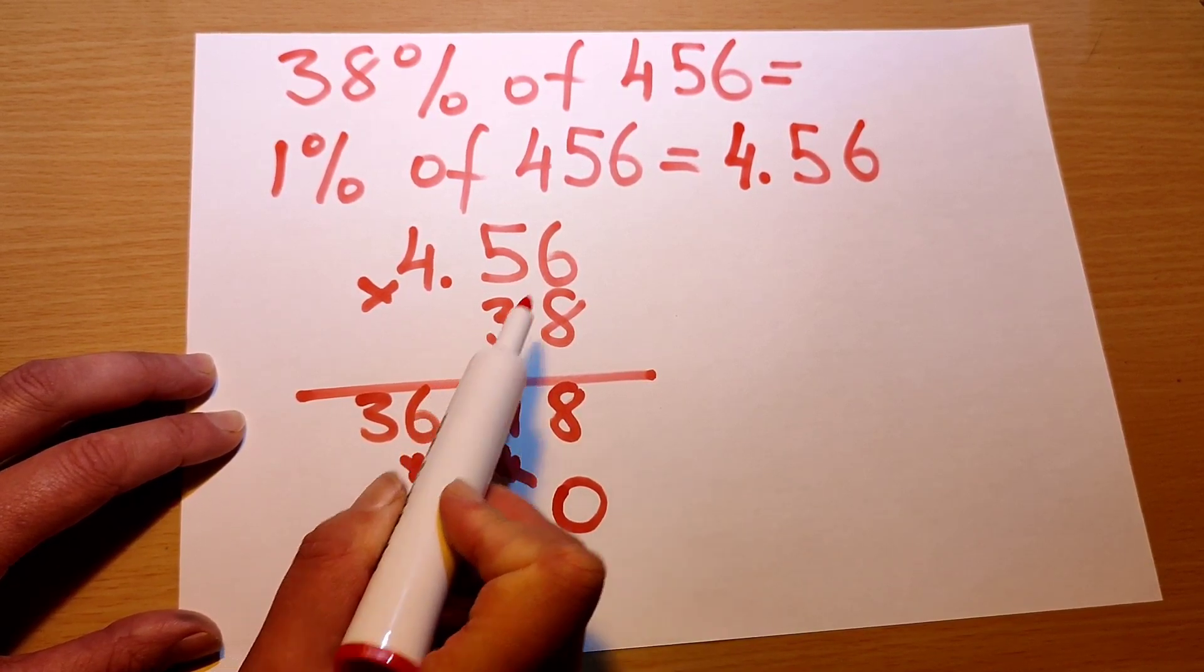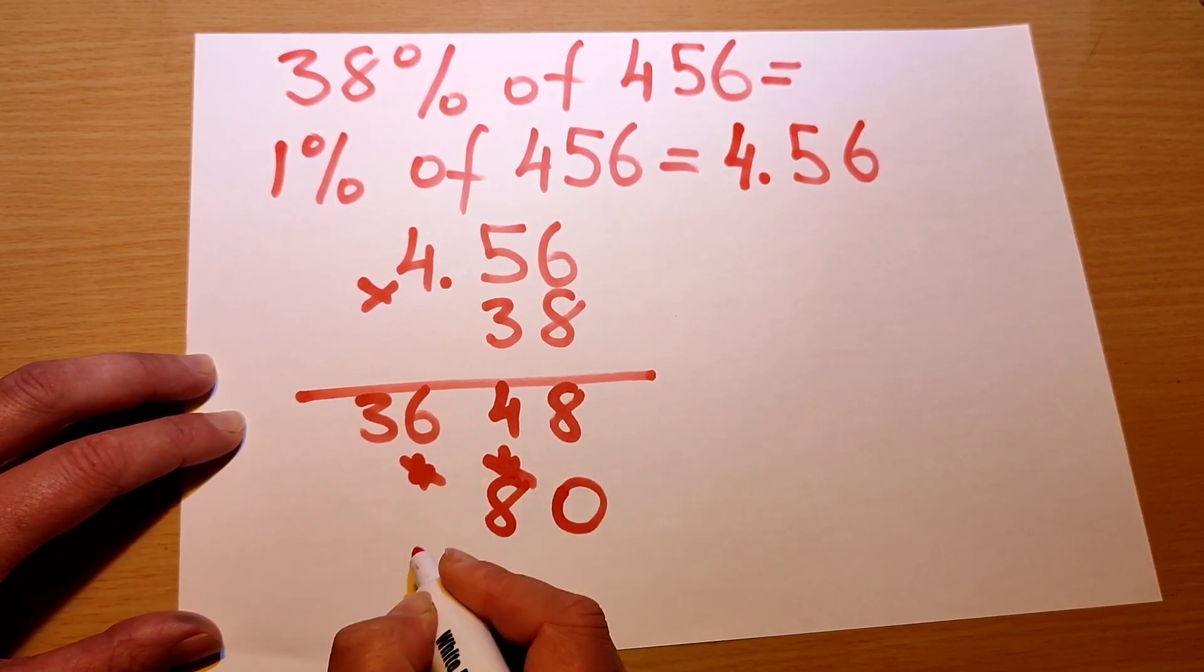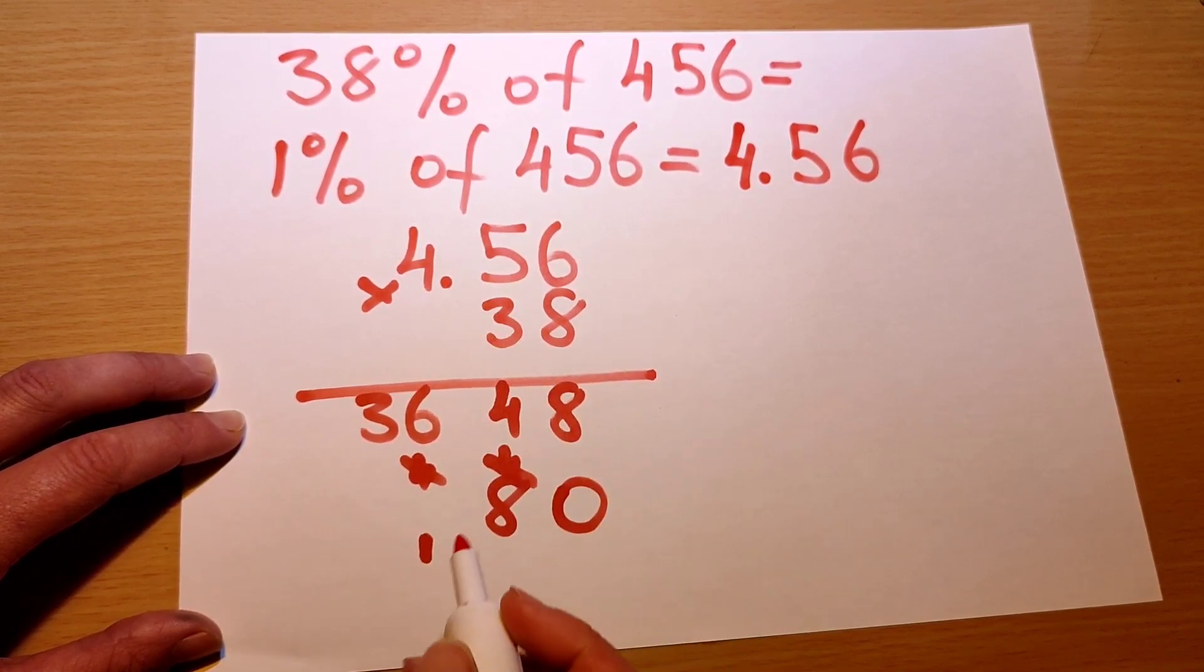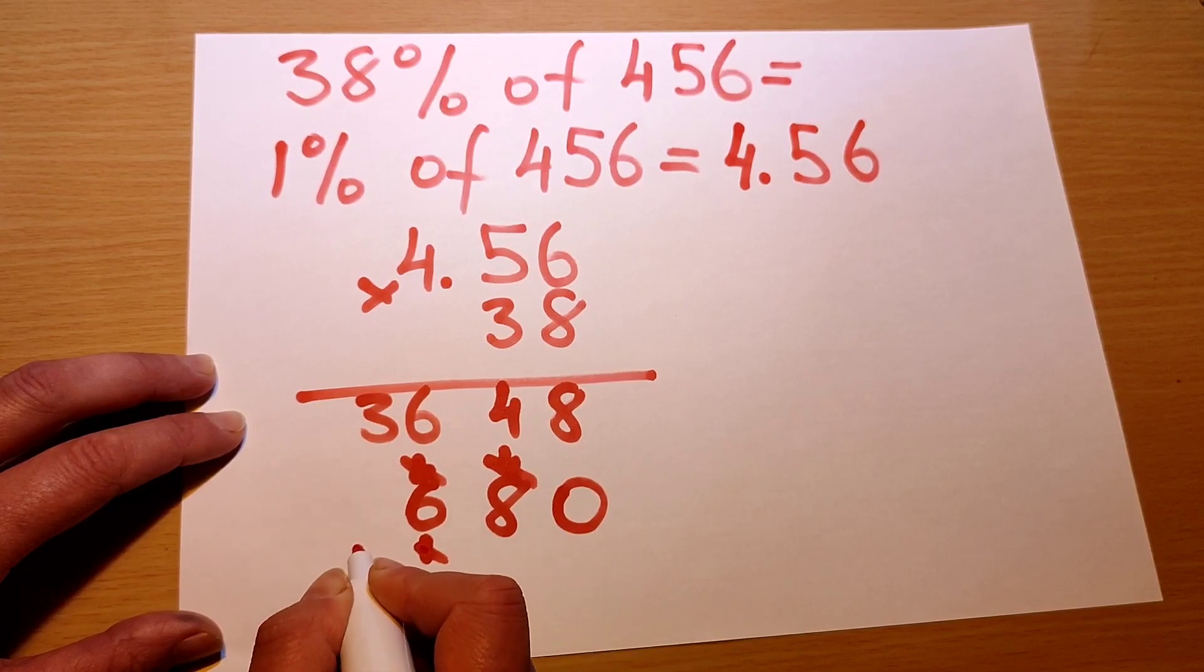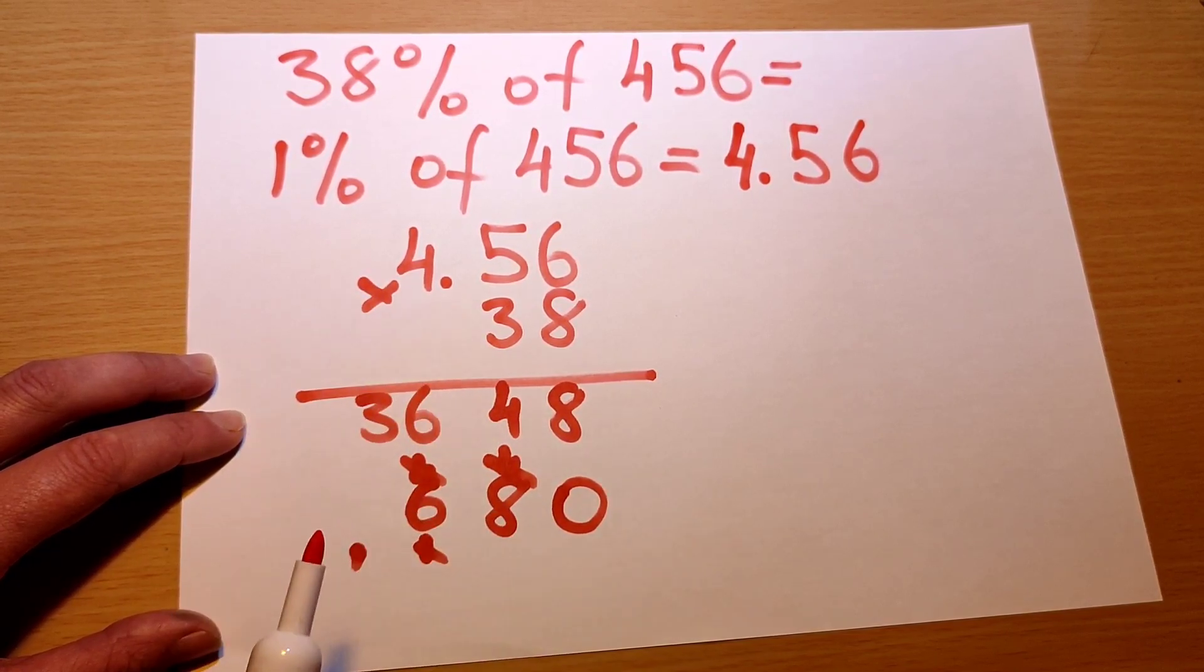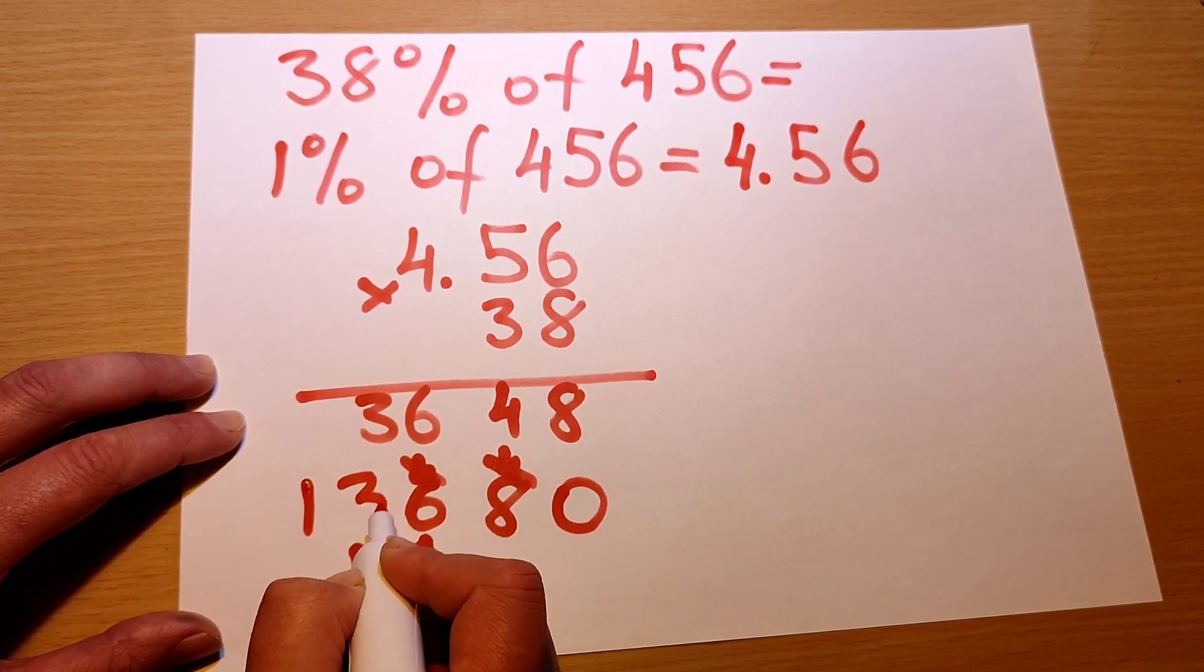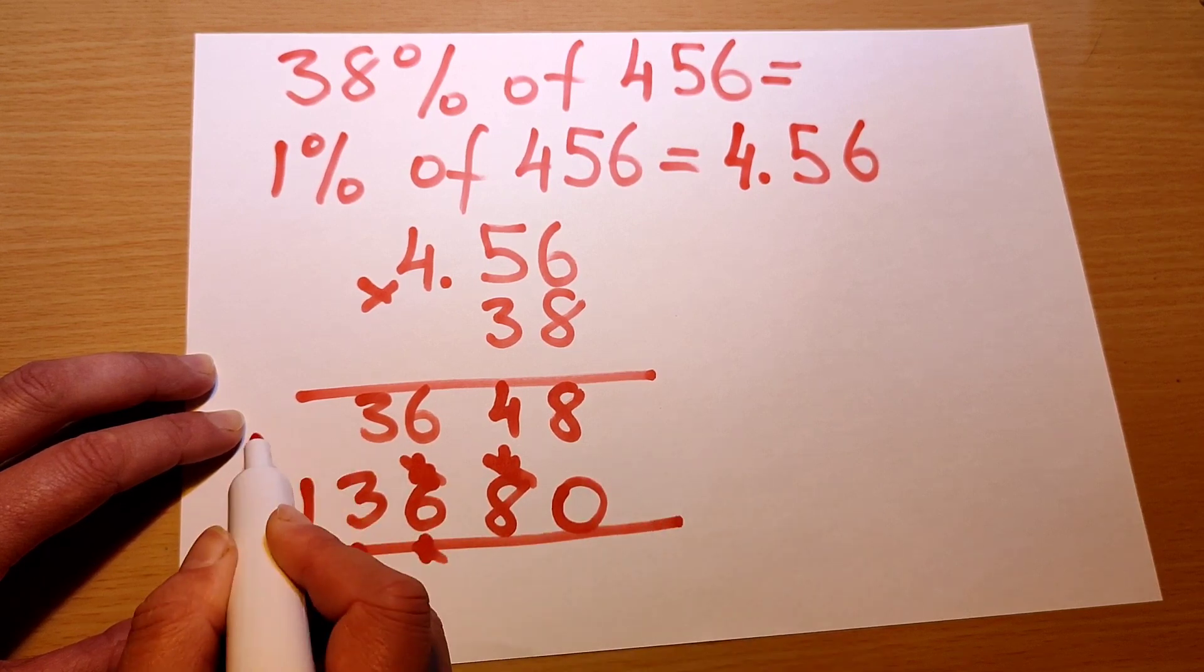Now we're doing 3 times 6 is 18, carry the 1 to the next column. 3 times 5 is 15, and we carry the 1—16, cross out this 1, carry the 1. 3 times 4 is 12, and we carry the 1—13, cross it out so we don't get confused when we add them up.